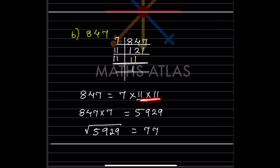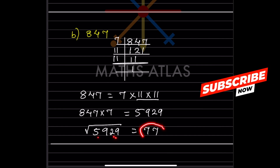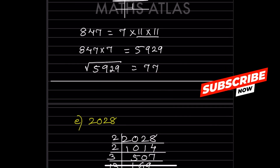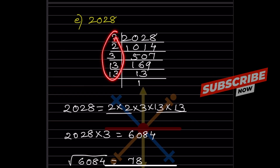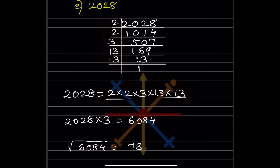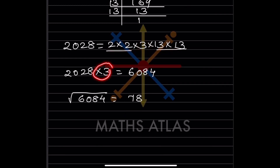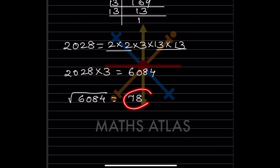For the next number, after grouping the factors, 7 is extra. So we multiply by 7 to get 5929, and the square root of 5929 is 77. For the following number, after grouping, the extra factor gives us 6084, and the square root of 6084 is 78.